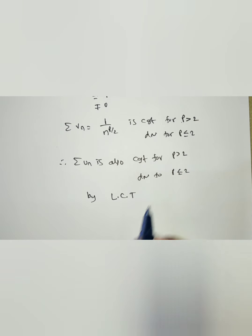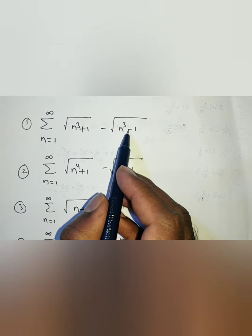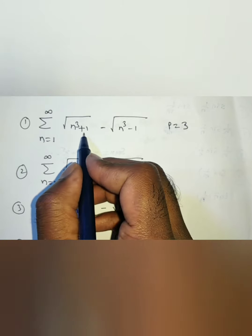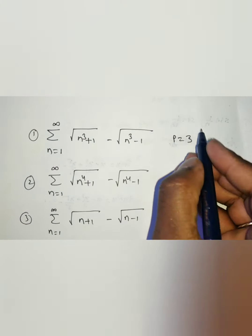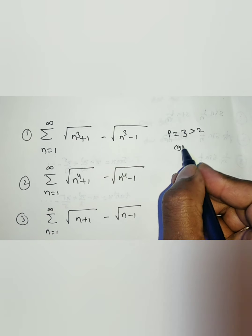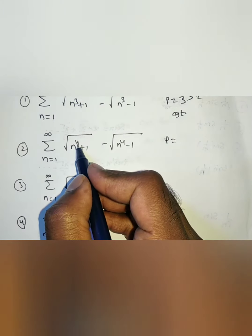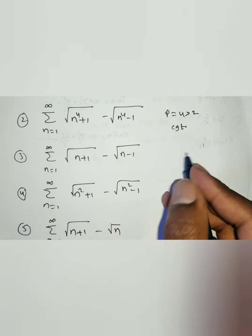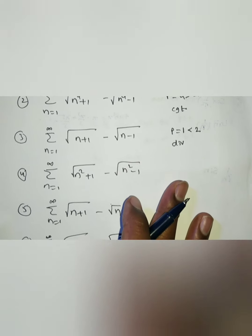Now applying the result to specific problems. For summation of square root of n power 3 plus 1 minus square root of n power 3 minus 1, here p equals 3, which is greater than 2. Therefore this series is convergent by the limit comparison test. For the next problem, p equals 4, which is greater than 2 — convergent. For n to the power of 1, p equals 1, which is less than 2 — therefore divergent by the limit comparison test. For square root of n squared plus 1, p equals 2, which is less than or equal to 2 — therefore divergent.